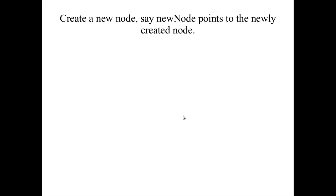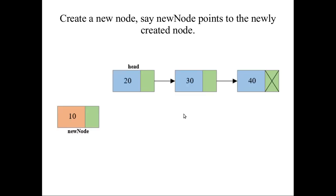Now we are going to see insertion at the beginning of the linked list. The first step is to create a new node — here the new node has a data field and an address field. This is the existing linked list where 20 is the head node and the final node has a null value in the address field. We have created one new node and we want to add it at the front.